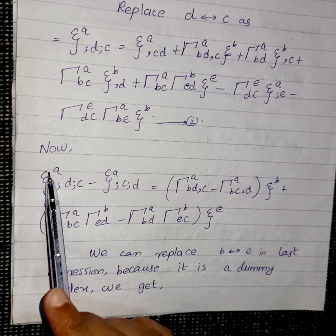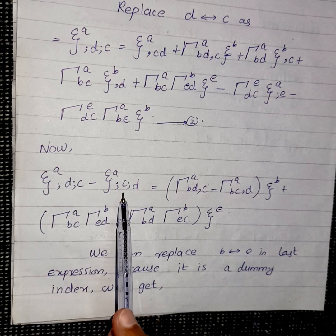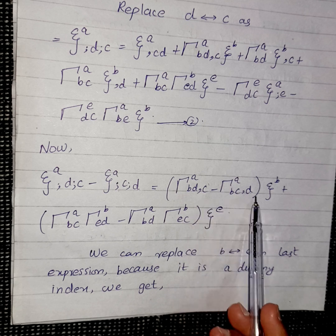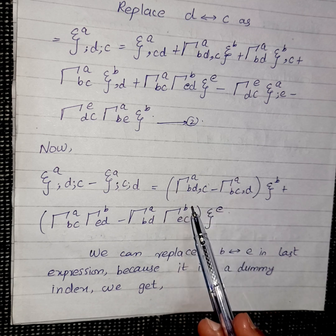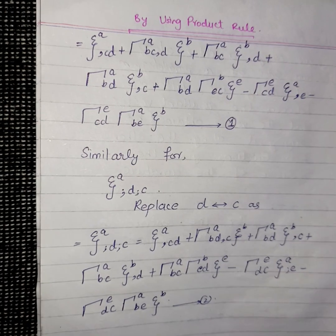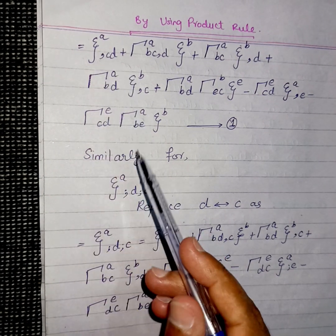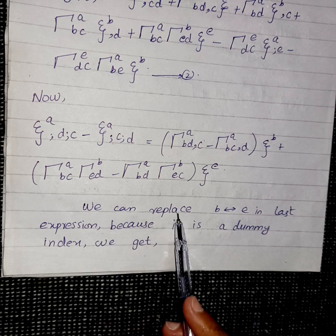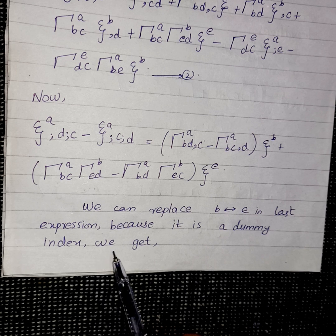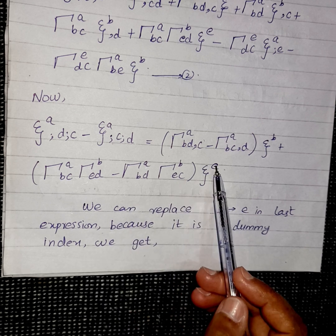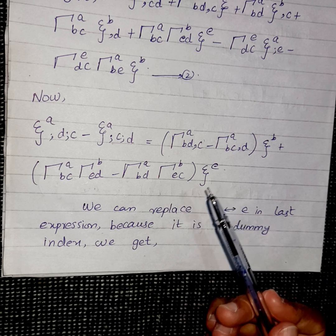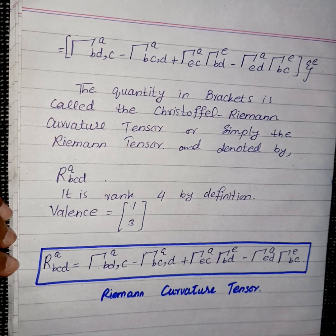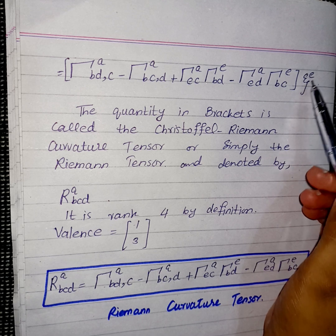If we subtract equation number two from equation number one, the first terms cancel with each other and similarly all the other symmetric terms cancel, leaving a remainder expression. We can then replace dummy index B by E in the last expression — since E is used as a dummy variable, substituting another dummy variable makes no difference to the original expression. After this substitution, we can factor out ξ^E as common.